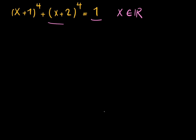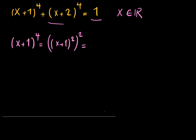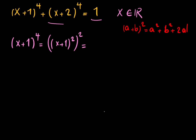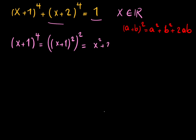The first thing I want to do is write (x+1)⁴ as (x+1)² squared. You know that if you have (a+b)² that equals a² plus b² plus 2ab, so I have (x² + 2x + 1)².